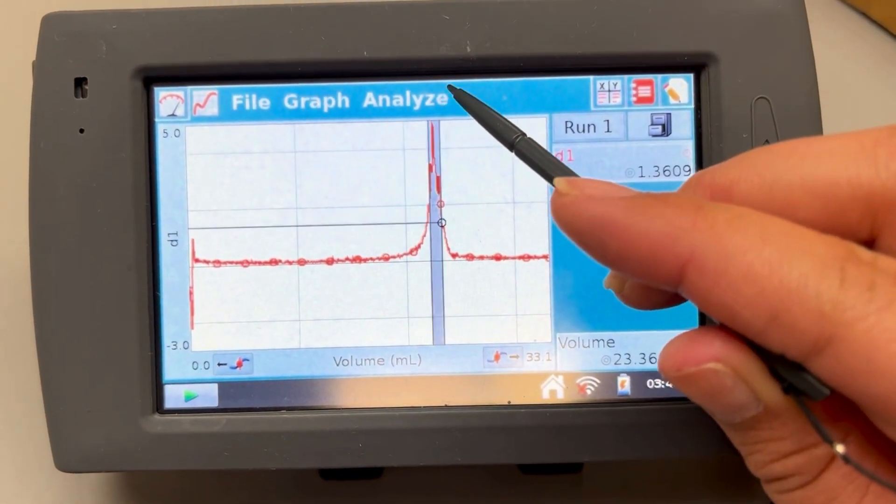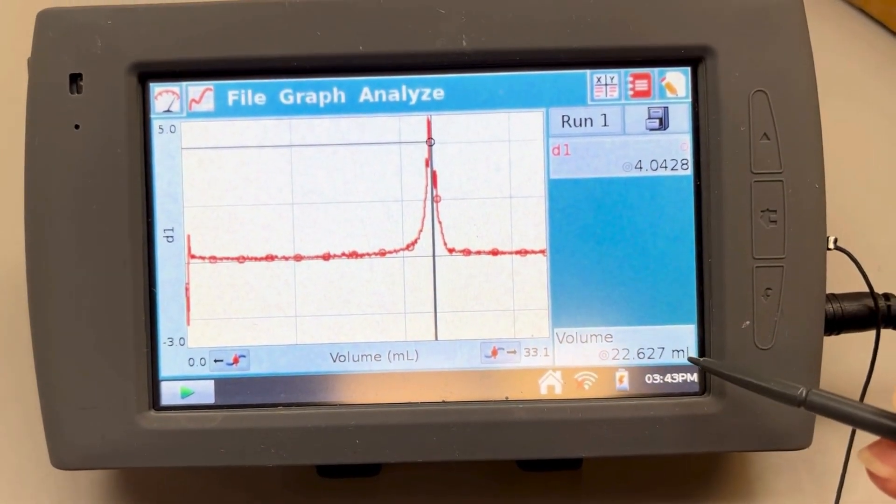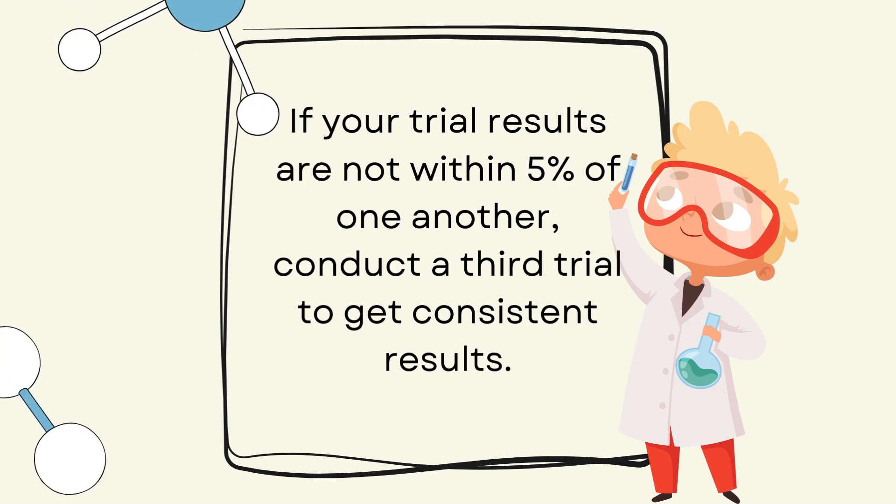And the peak of the graph will be your first derivative and it will give you your volume on the side. If your trial results are not within 5% of one another, conduct a third trial to get consistent results.